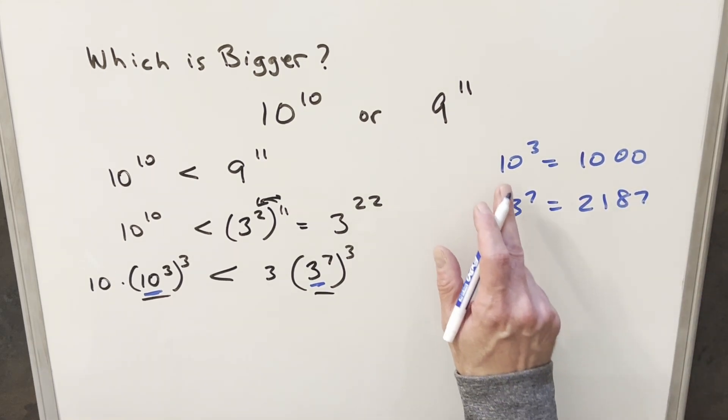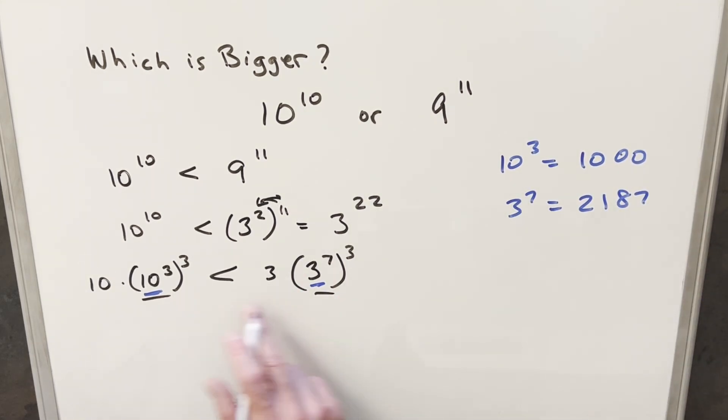So now of course we can see 3 to the 7th is greater than 10 cubed, and if both these are cubed, then this piece here is greater than this, but the only problem is we've got 10 greater than 3, so we're not quite done yet.